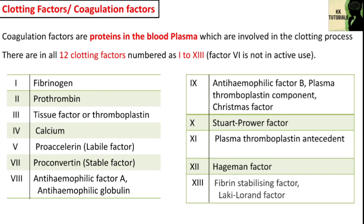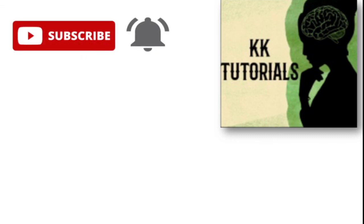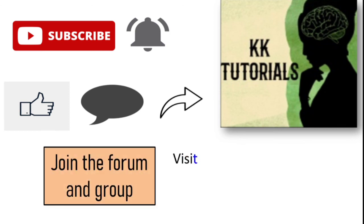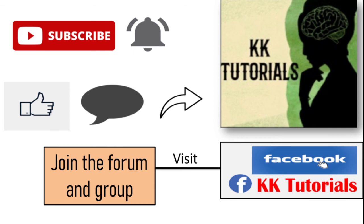So these are all the clotting factors, which are plasma proteins in the blood, important in both the intrinsic and extrinsic pathways, and play a crucial role in hemostasis. Hope you find this video informative and interesting. In my upcoming video we will talk about intrinsic and extrinsic pathways. If you like this video, subscribe to my channel and press the bell icon. Do like, comment, and share. For more updates, join the forum and visit my Facebook page — the link is provided in the description below. Have a happy learning!